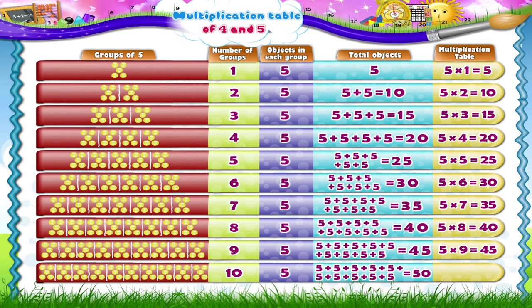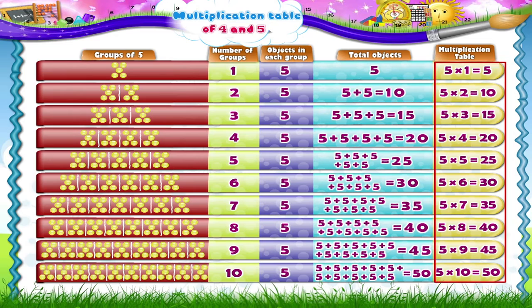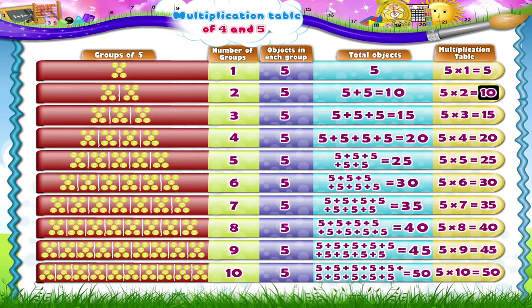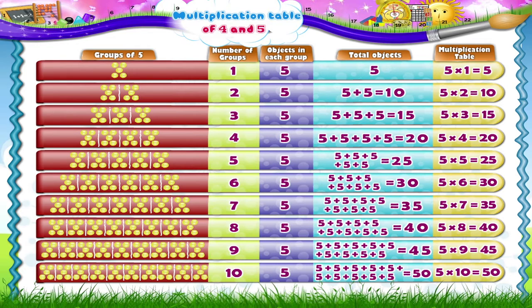Let us now observe the numbers in the last column. The numbers are five, ten, fifteen, twenty, twenty-five, thirty, thirty-five, forty, forty-five, fifty. In what stages do these numbers occur, Starry? Yes, in the stages of five. Thus, if we start with five and write the first ten numbers in stages of five, we get the five times table.